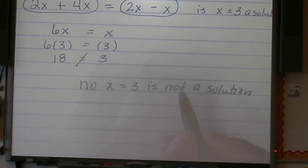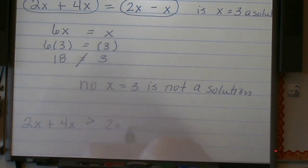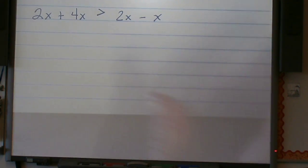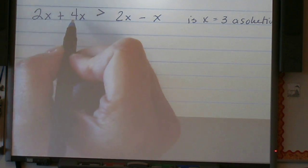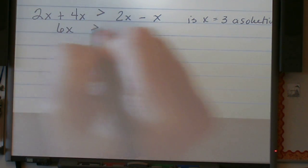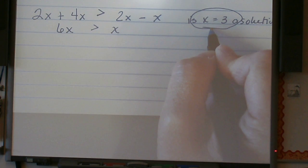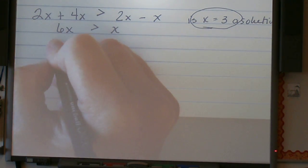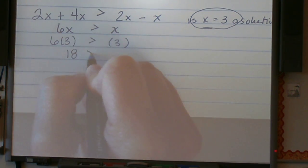Let's work with an inequality now. I'm going to use the same expressions, but I'm going to put an inequality sign in there. So 2x plus 4x greater than 2x minus x. And once again, the question is, is x equal to 3 a solution? So again, I can simplify. 2x and 4x is 6x greater than 2x minus x is just x. And then I substitute my given value for x into the expression on each side of the inequality. So 6 times 3 greater than 3. 6 times 3 is 18 greater than 3.